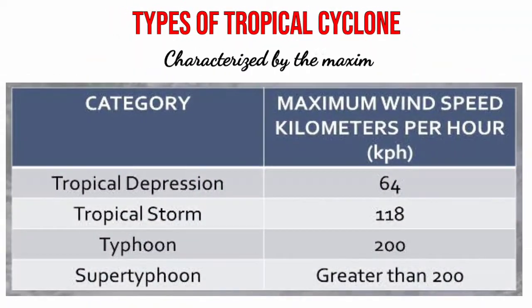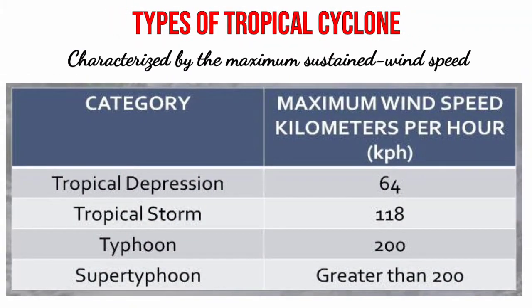The type of tropical cyclone is characterized by the maximum sustained wind speed. At 64 kilometers per hour, it is called a tropical depression; at 118, a tropical storm; at 200, a typhoon; and greater than 200, it is called a super typhoon.